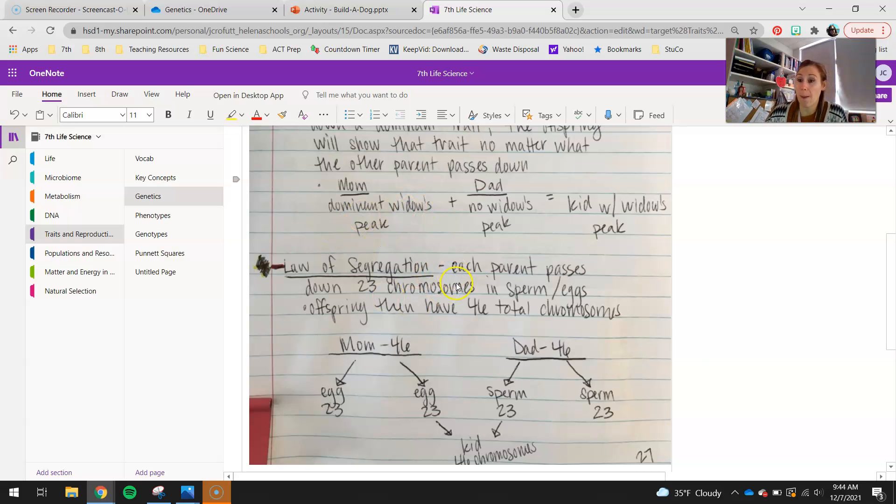We get 23 from mom, and we get 23 from dad. Keep in mind that your parents also have 46 in their cells, so when they're making their sex cells, their sperm or their egg, they don't get to choose, but their body chooses for them which 23 chromosomes they're passing down in either that sperm or egg.